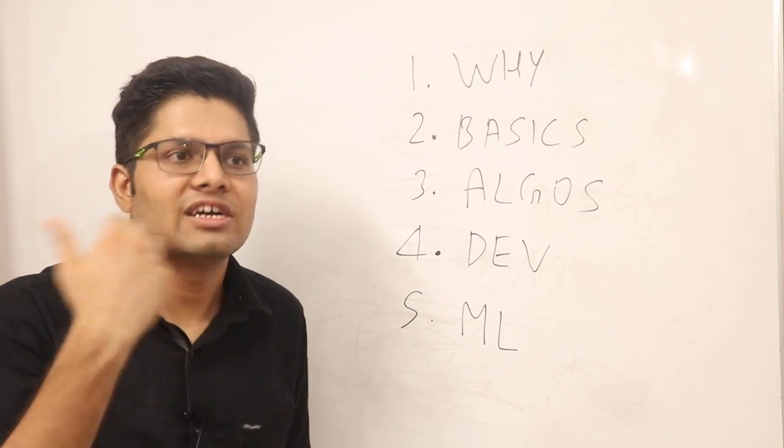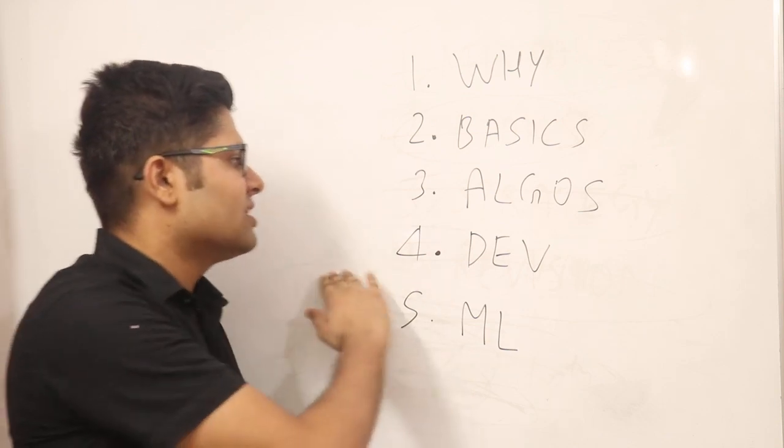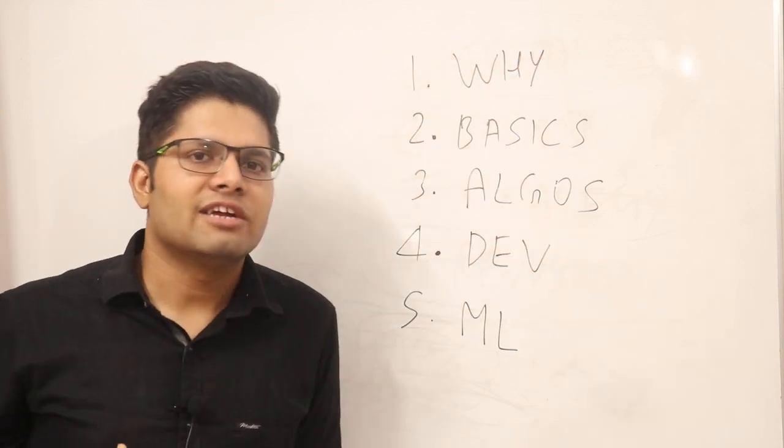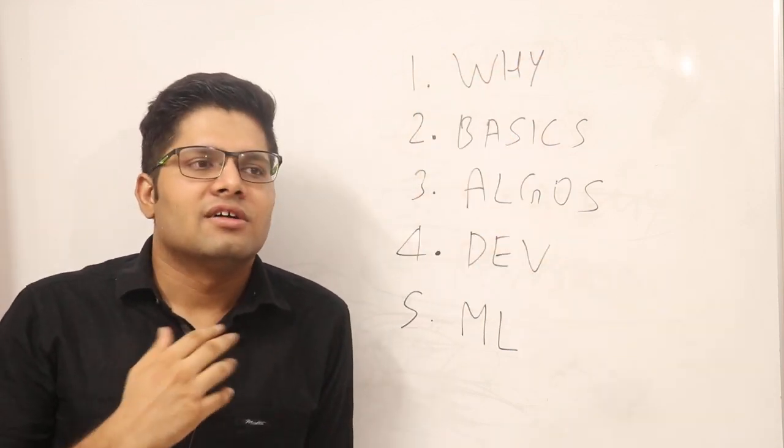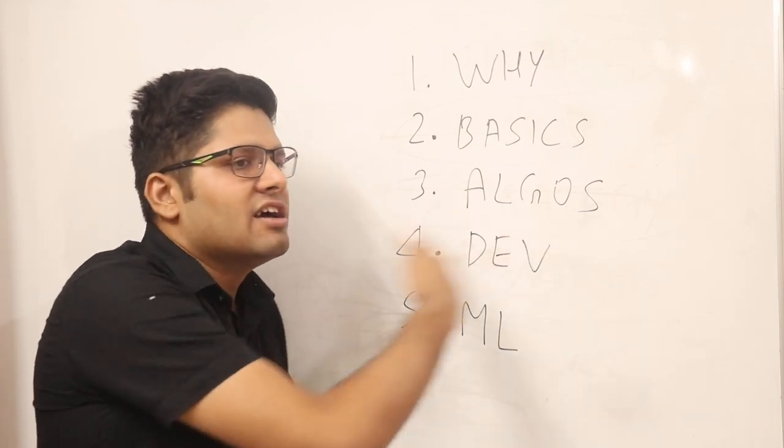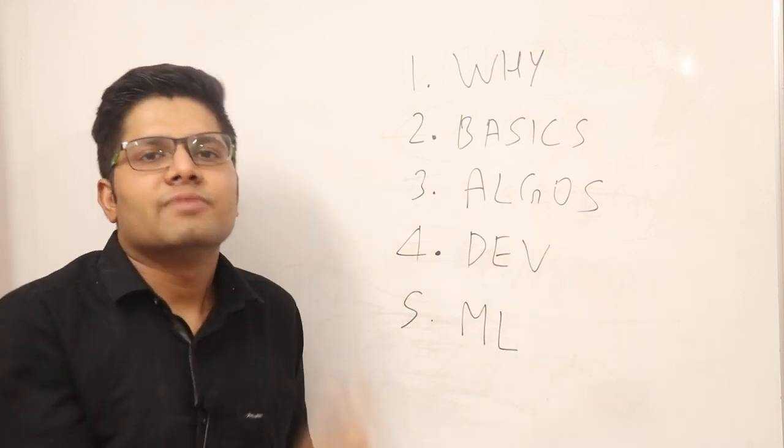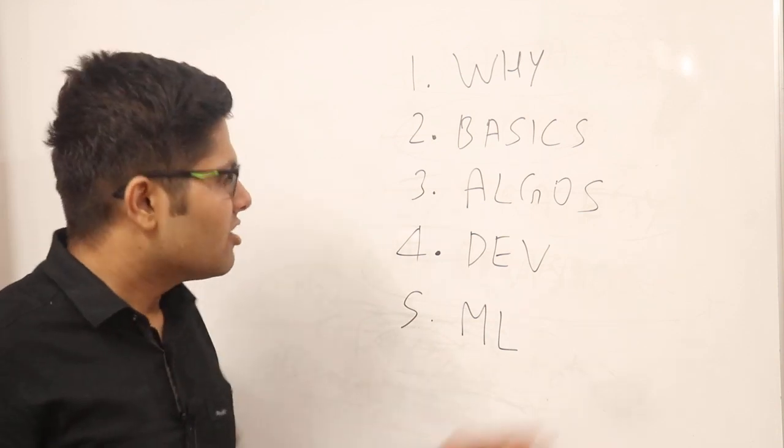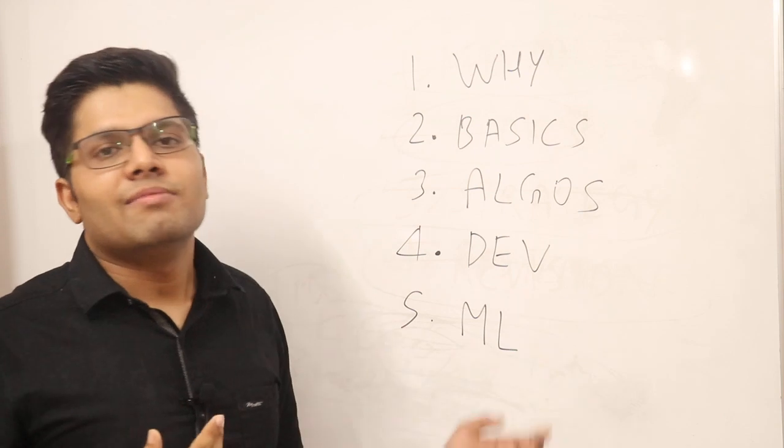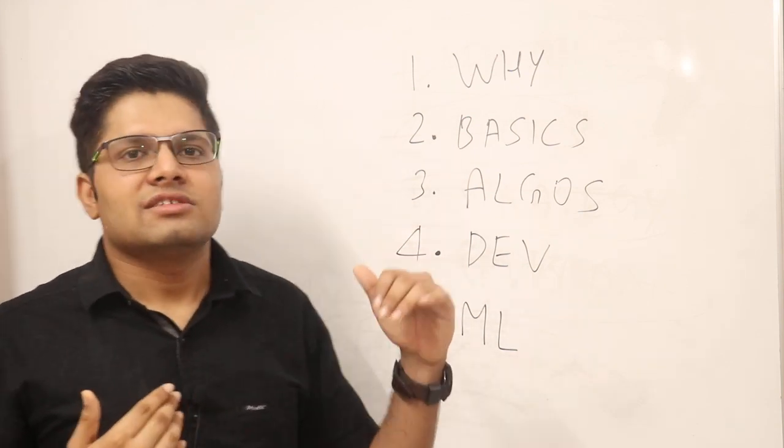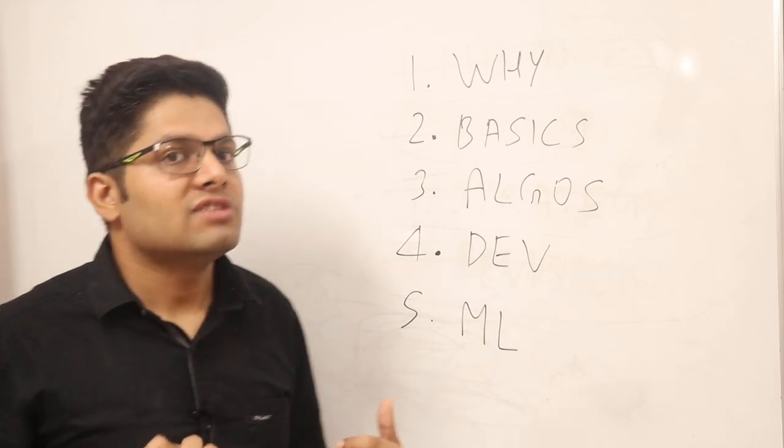As you increase your skill level, your pay and your stature in the company also increase. For example, if you're just an Android developer or a front-end developer, your pay and your tasks are not going to be that exciting for most people. If you're a full-stack developer who knows how to do back-end, you'll probably get paid more. And if you also know ML and can get an ML role—some people, especially in IITs and higher-end colleges, can get an ML role just after graduating, though it's not very common.